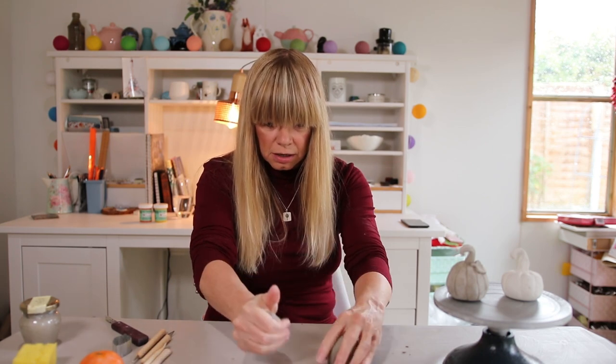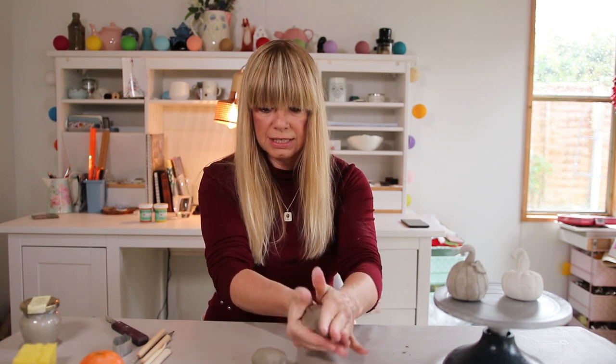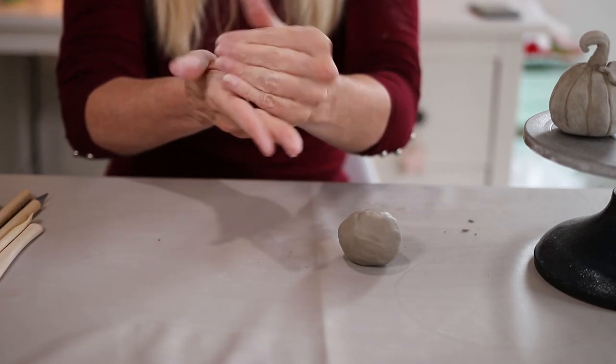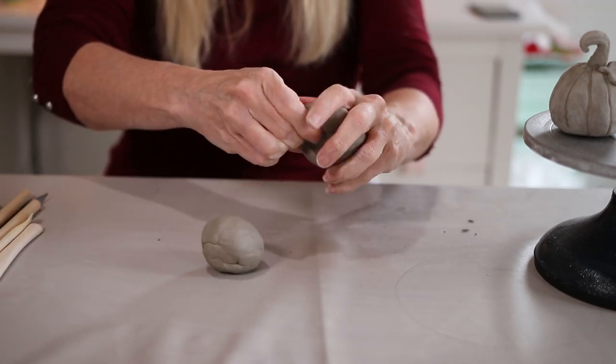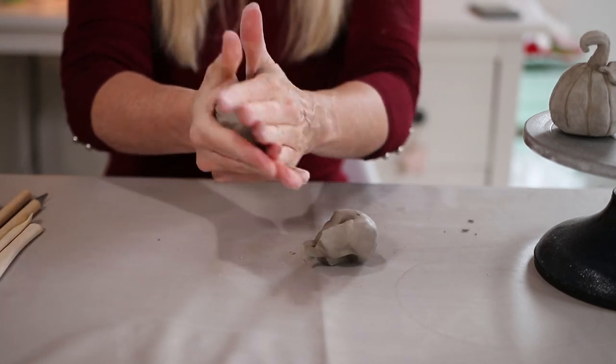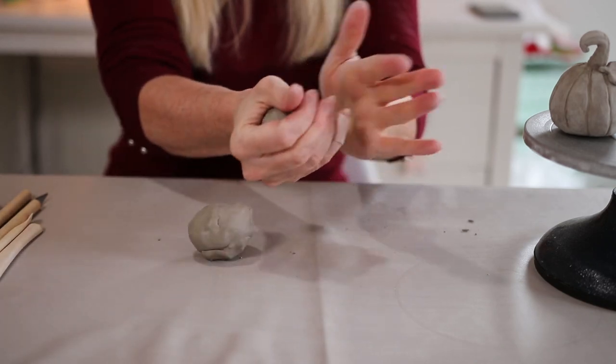Again we're going to roll these two pieces into a ball. As you can see one looks bigger than the other so I'm going to take some clay away from this one and add it to this side and I find this is the best way to make my pumpkins.